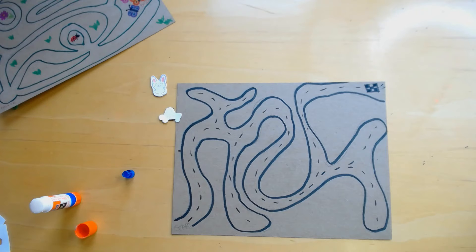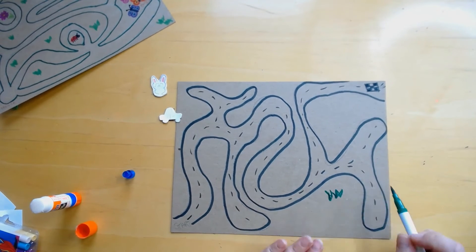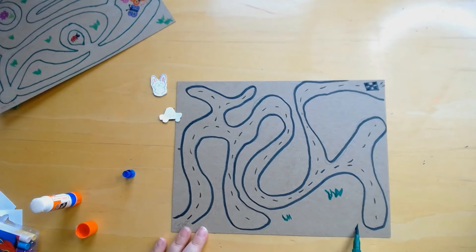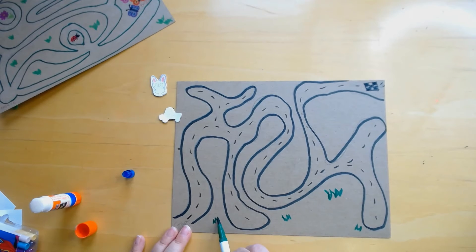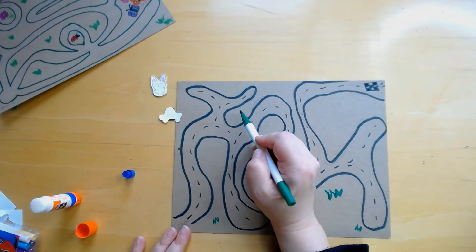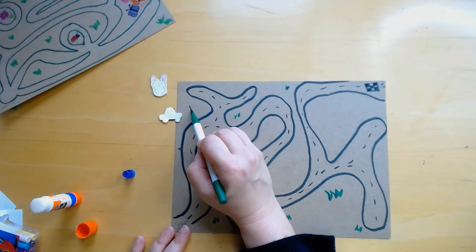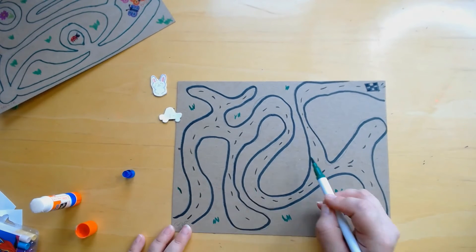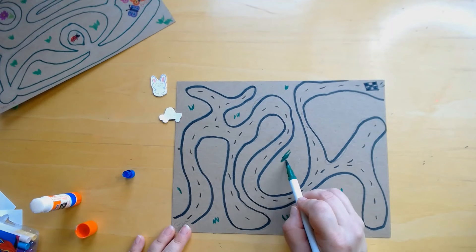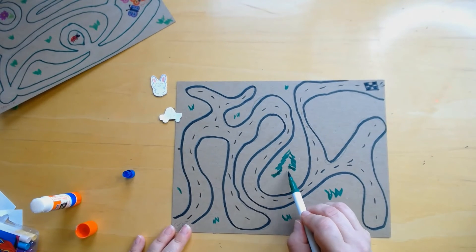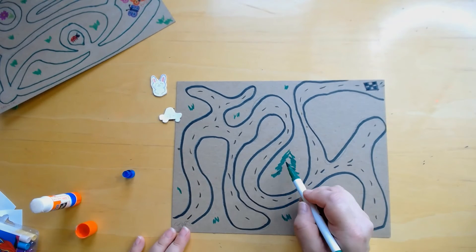And then I'm just going to, there's some grass here, grassy spots. Maybe there's a lake right there too. I think I'm going to make a lake there and over here maybe some flowers over here, or some trees. Maybe I'll make a little tree. So you design your track any way that you'd like.